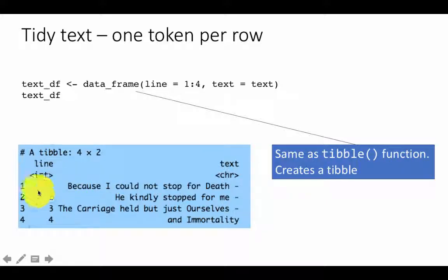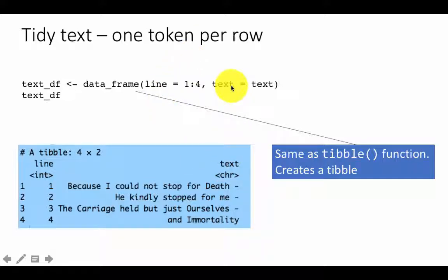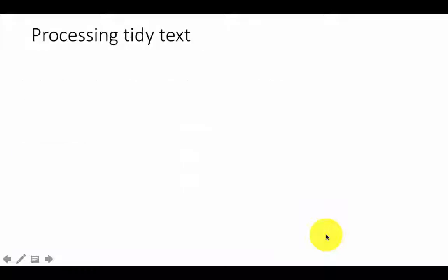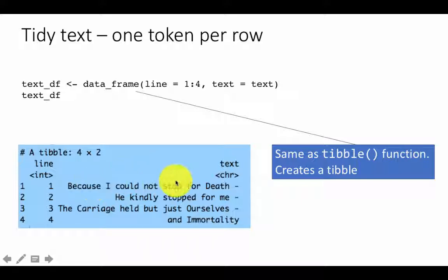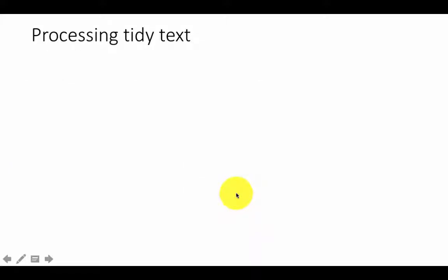If you create this and then type text_df, you'll see a tibble with two columns as expected. The first column is called 'line' and the second is called 'text'. Notice that one, two, three, four at the far left is just the row number that appears when you output a tibble — it is not part of the data. The data has two columns: 'line' and 'text'. The text column will have every element of the vector we created earlier, and our job now is to break this text into individual words.